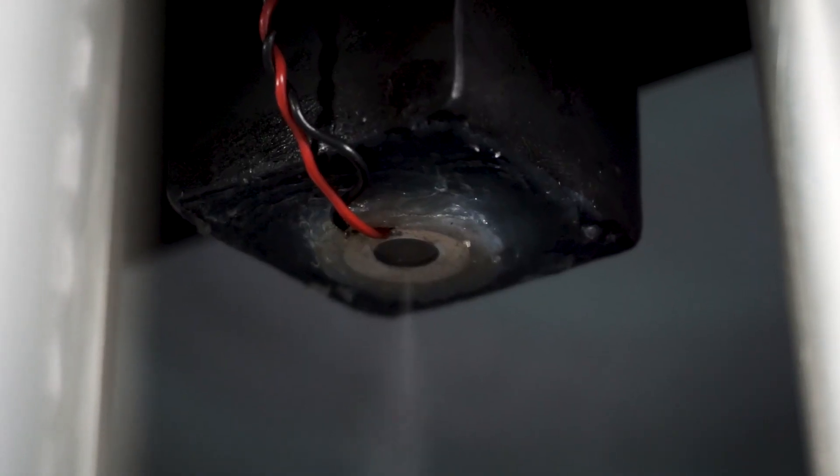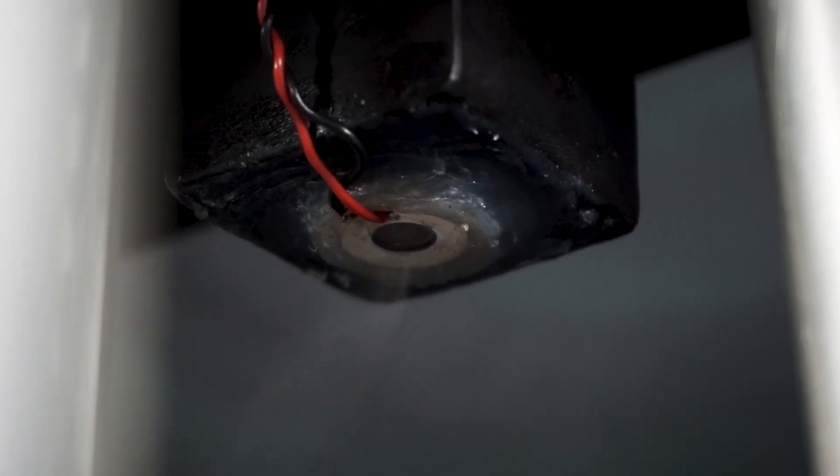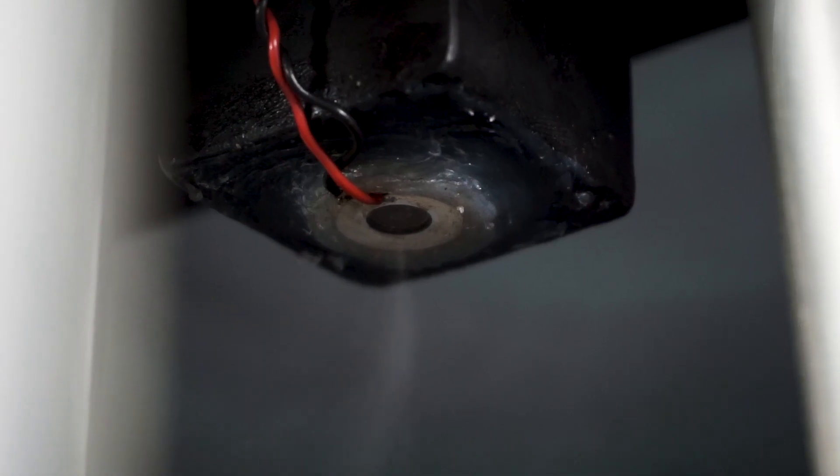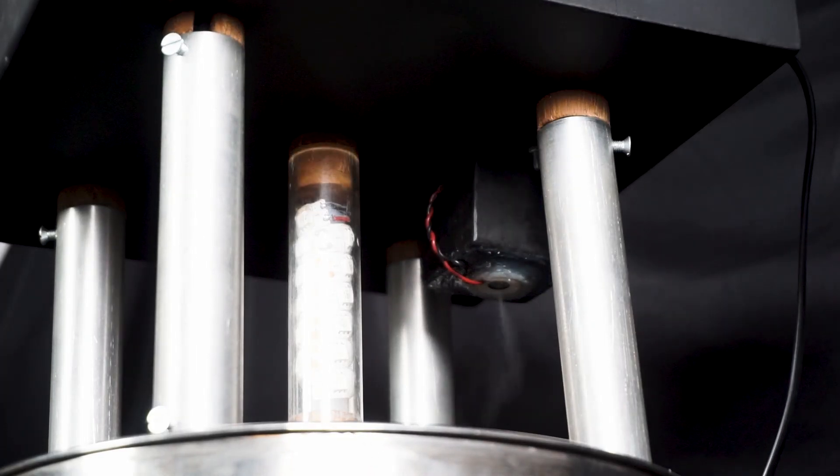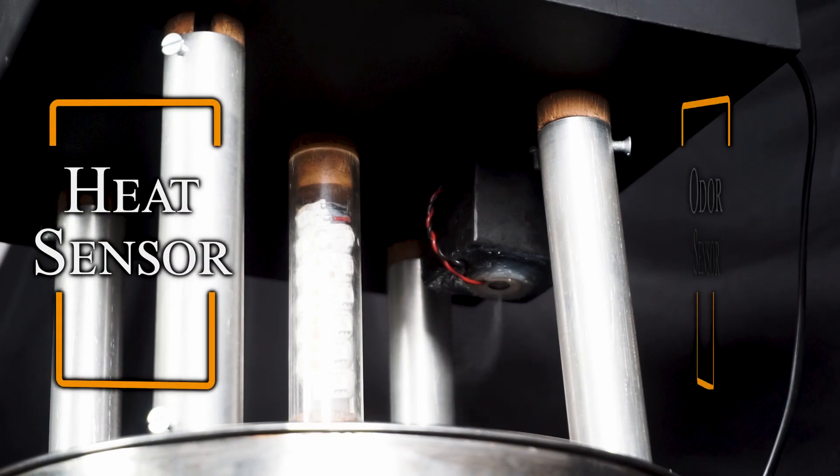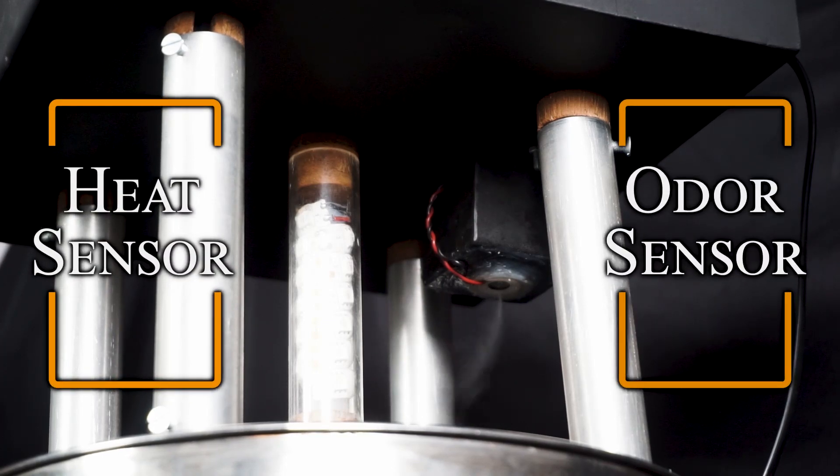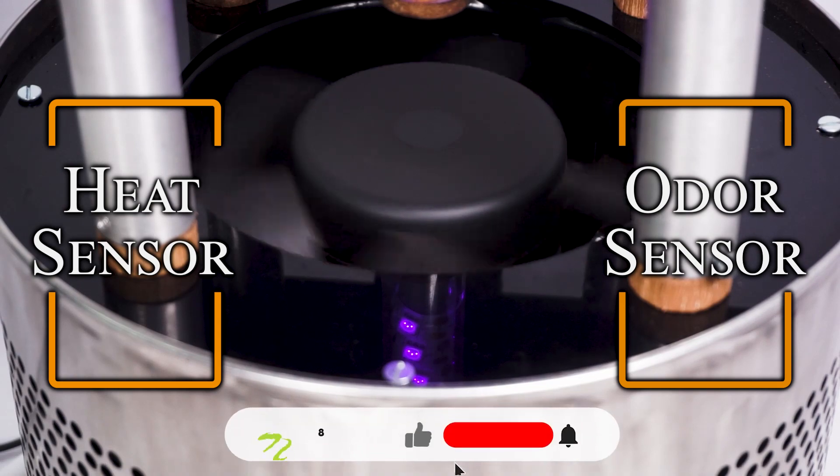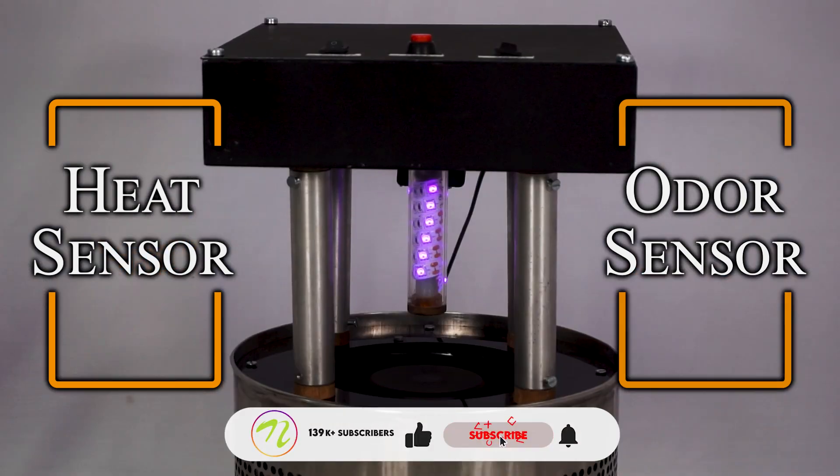Apart from that, we have a moisture generator or humidifier which is used to simulate human sweat so that the mosquitoes are more attracted because they have both these sensors, temperature sensor as well as odor sensor. Both these things are used to simulate human body temperature and human body odor or sweat.